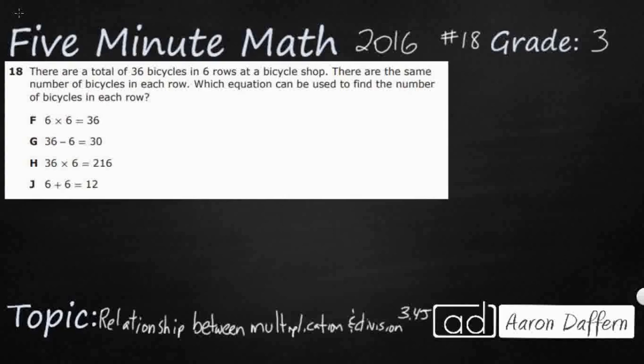So this is kind of a big problem. Let's read it together real quick. There are 36 bicycles in 6 rows. Those are the only two numbers we're going to get. There are the same number of bicycles in each row. Which equation could be used to find the number of bicycles in each row?